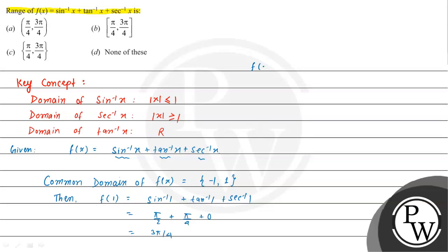Similarly, we have to find f(-1). So this will be sin inverse (-1) plus tan inverse (-1) plus sec inverse (-1). Sin inverse (-1) has value -π/2, then tan inverse (-1) has value -π/4, plus sec inverse (-1) has value π. Solving this, we get π/4.